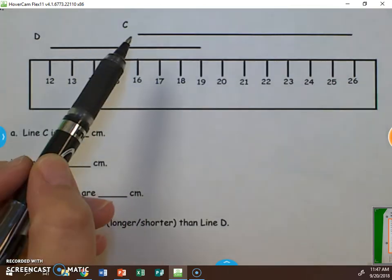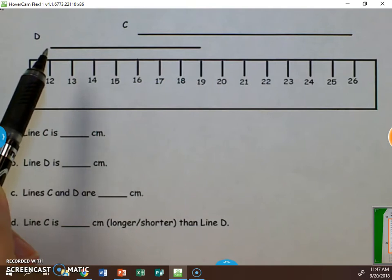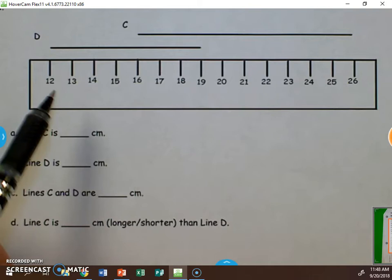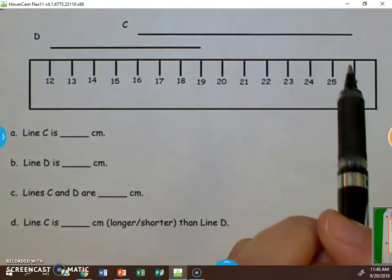In this case, you can see line C here and line D. They don't start at zero on this ruler. This ruler actually starts at 12 and stops at 26.